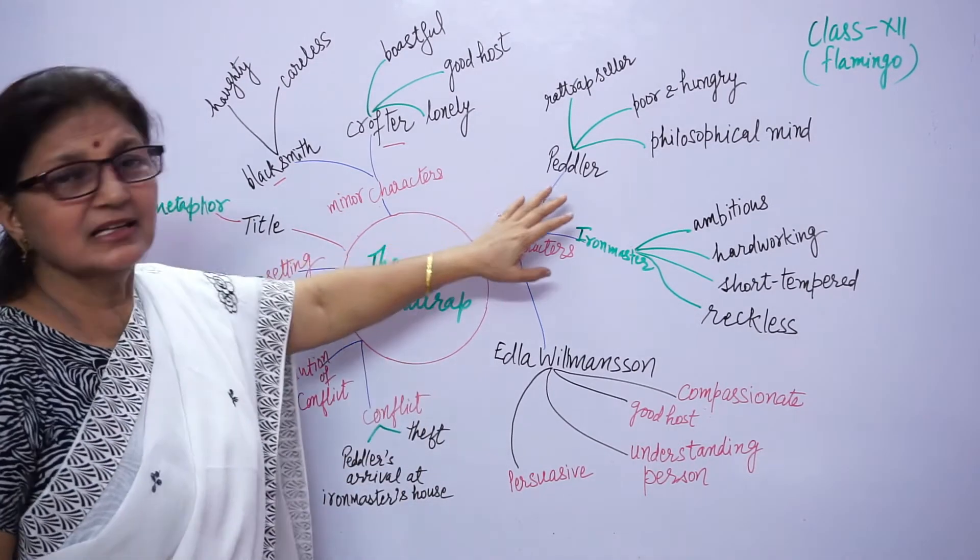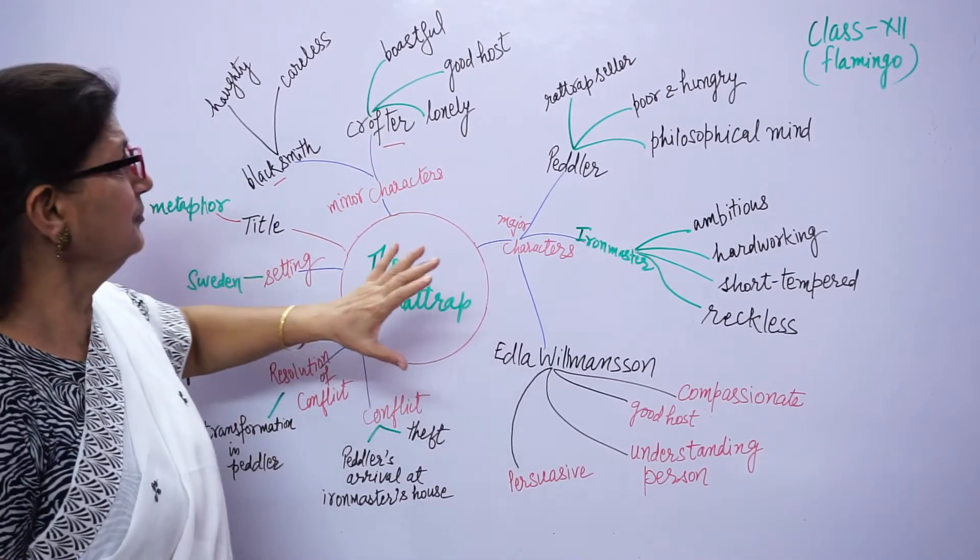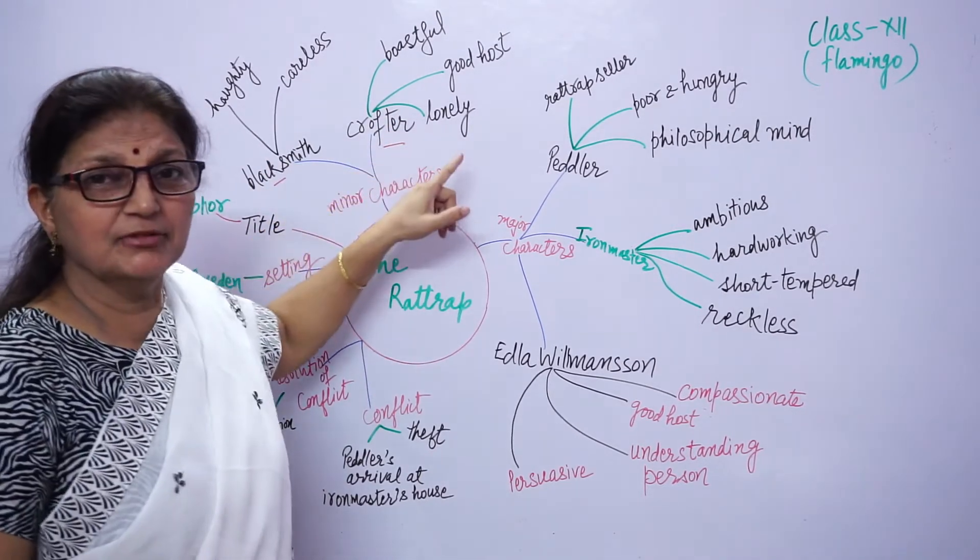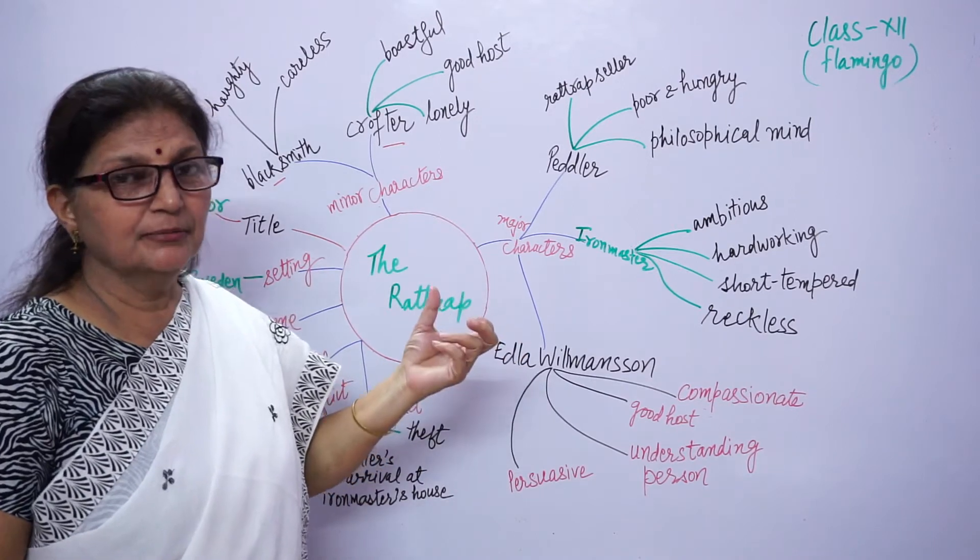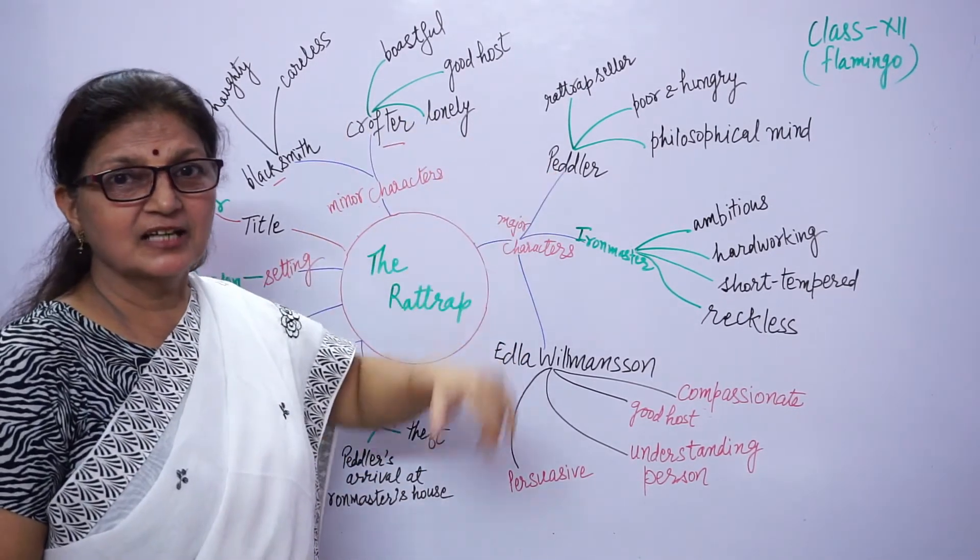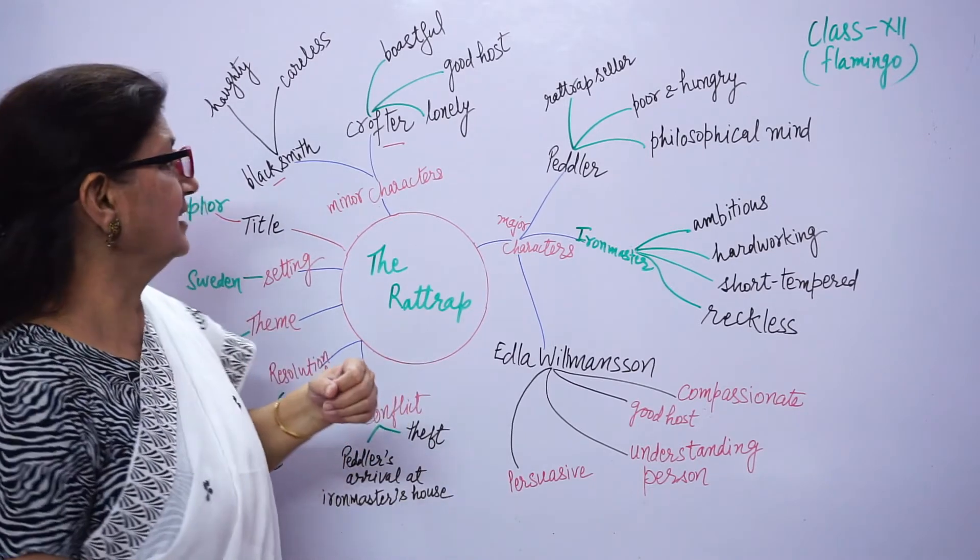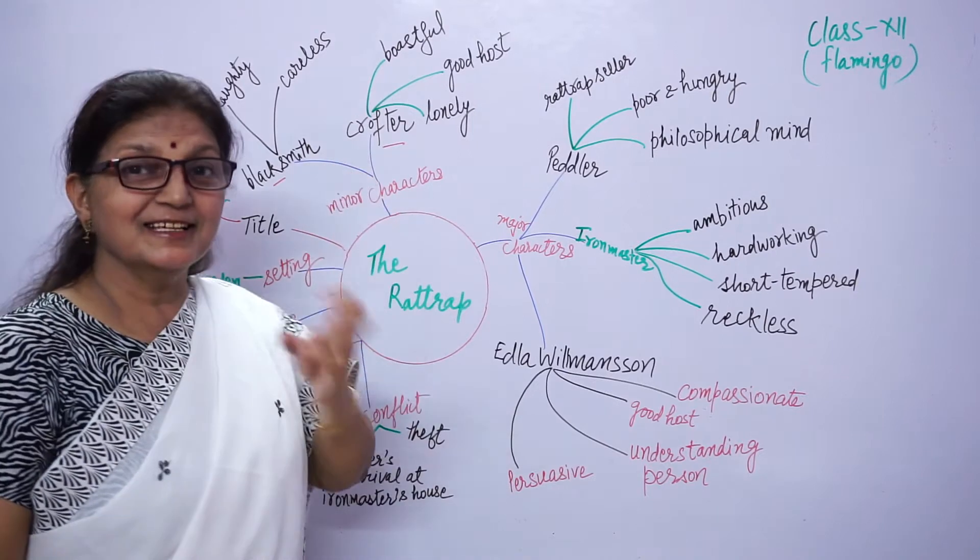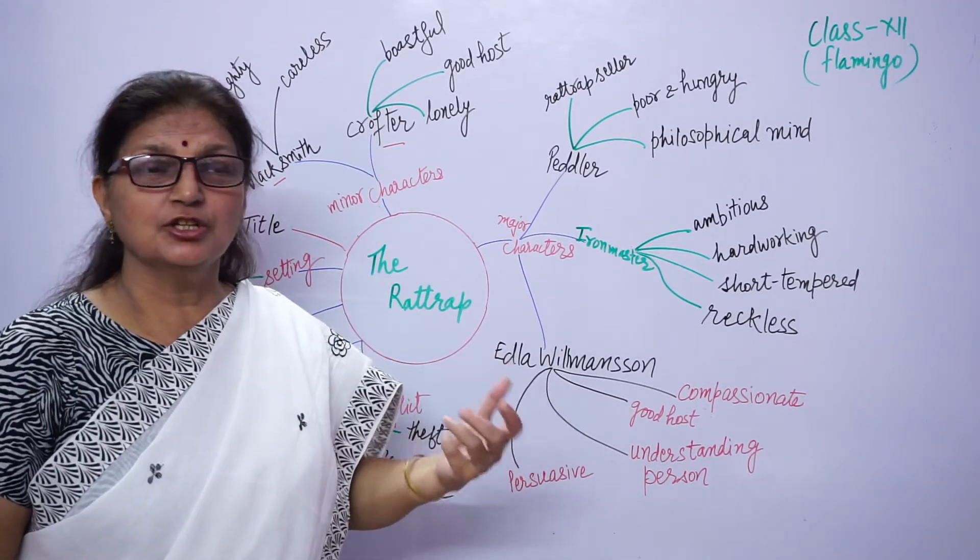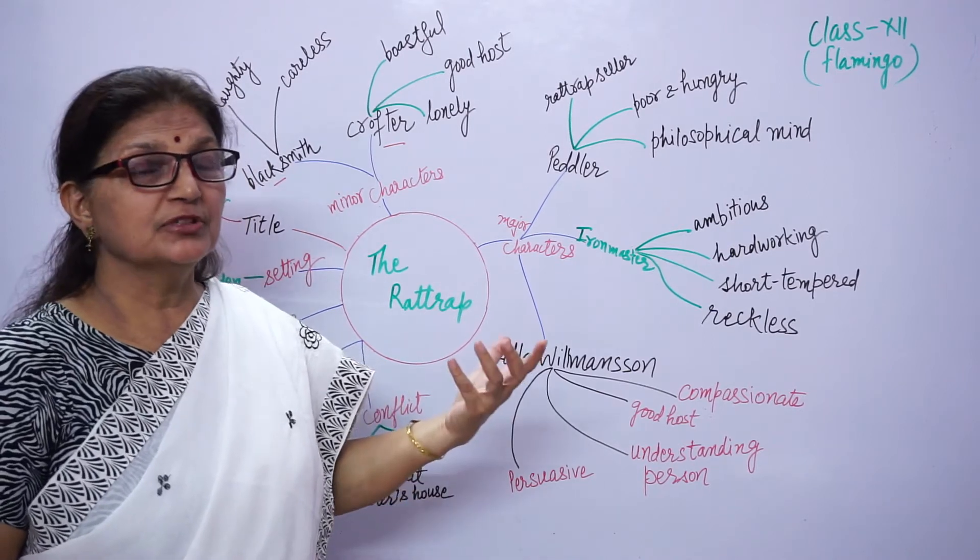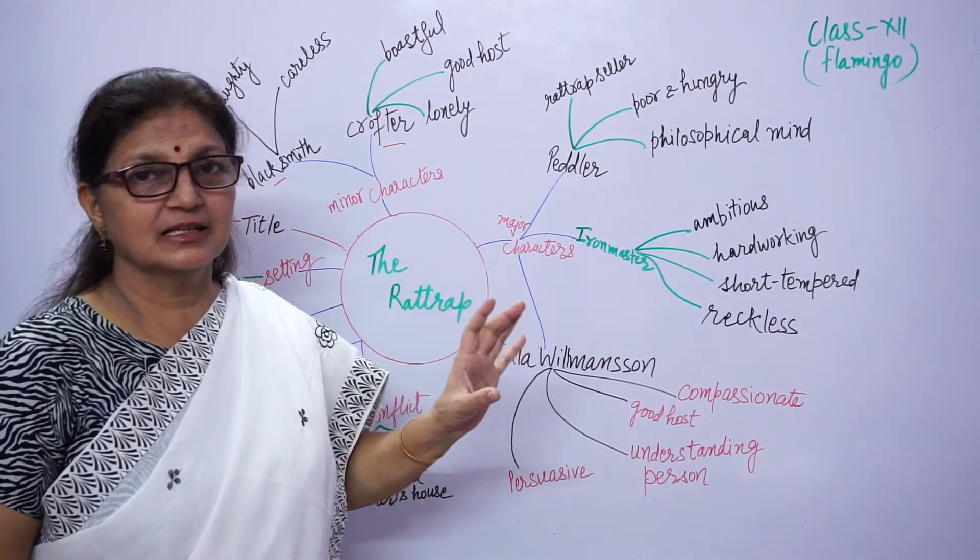The peddler went to the crofter's cottage. He has no family, wife or children. He is a very good host. The crofter gave the peddler shelter, allowed him to stay in his cottage. He gave him food, supper. He entertained him by playing cards with him and shared his secrets. He is a good host but a bit boastful person. It's not good to show his money to the stranger. He is a boastful character, but a nice character in the story.